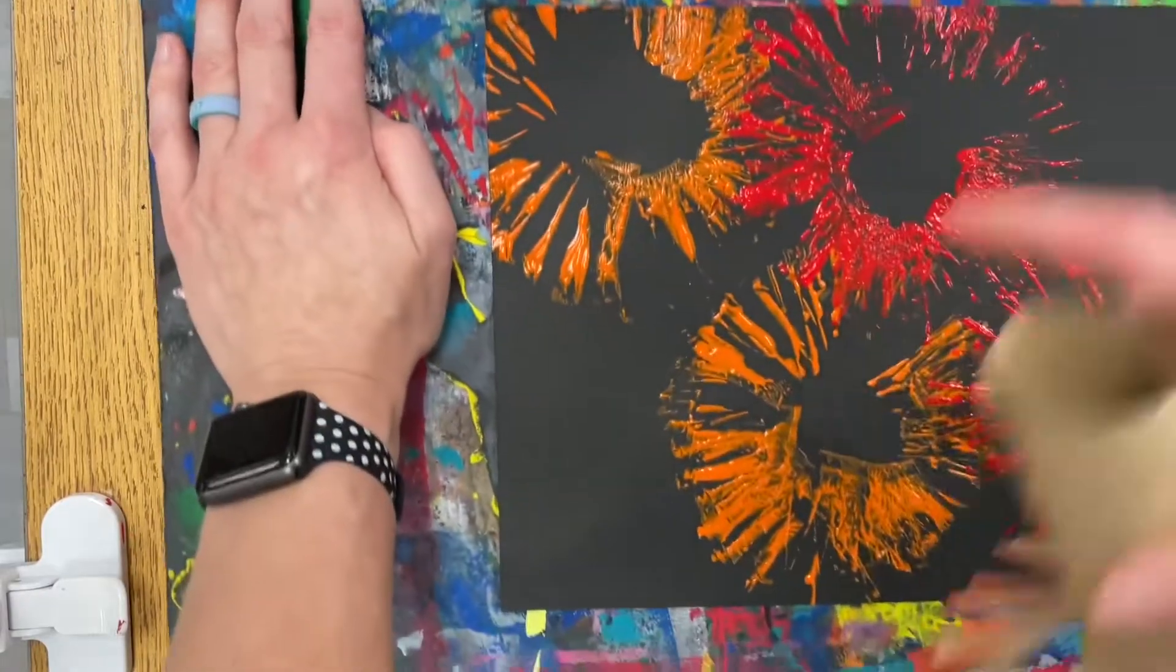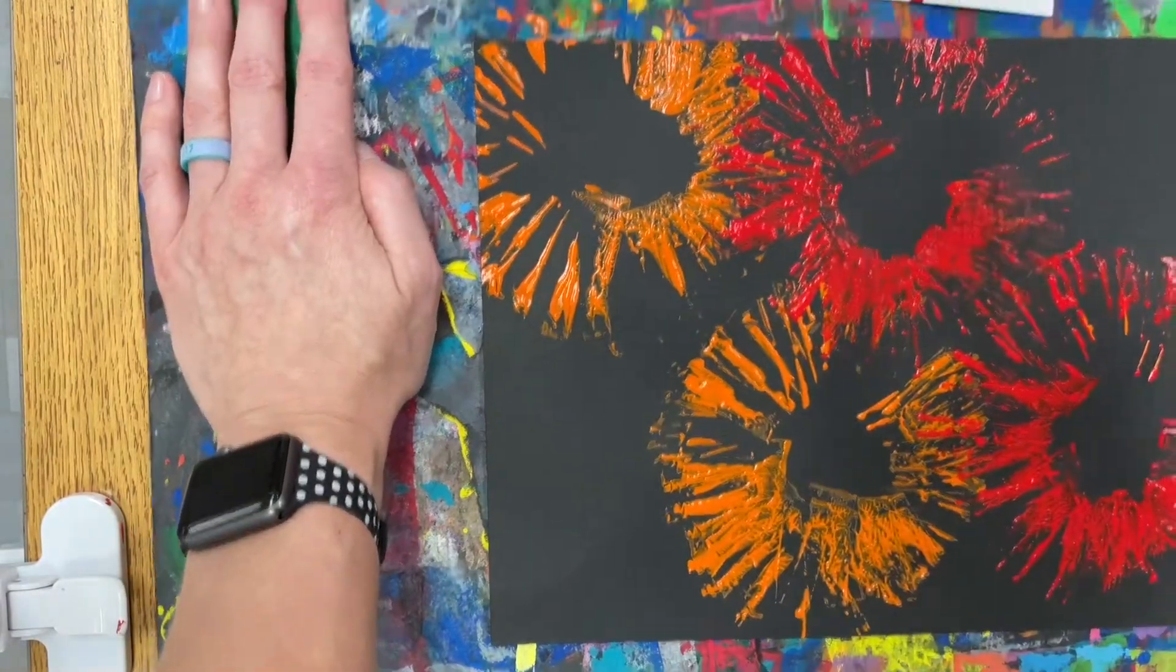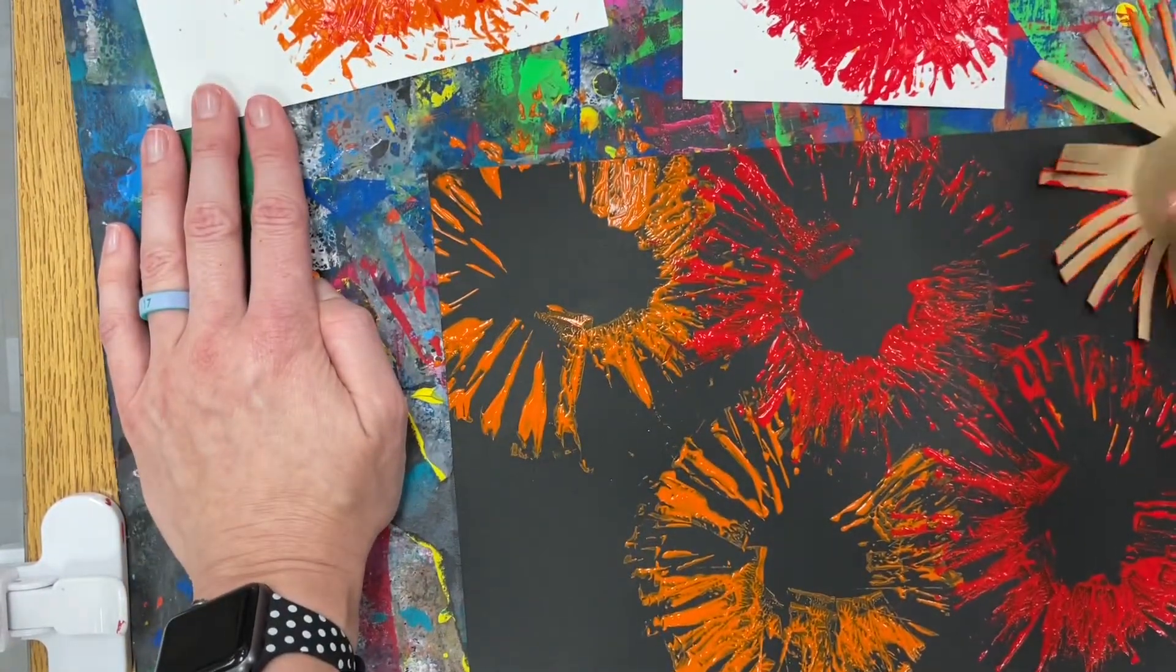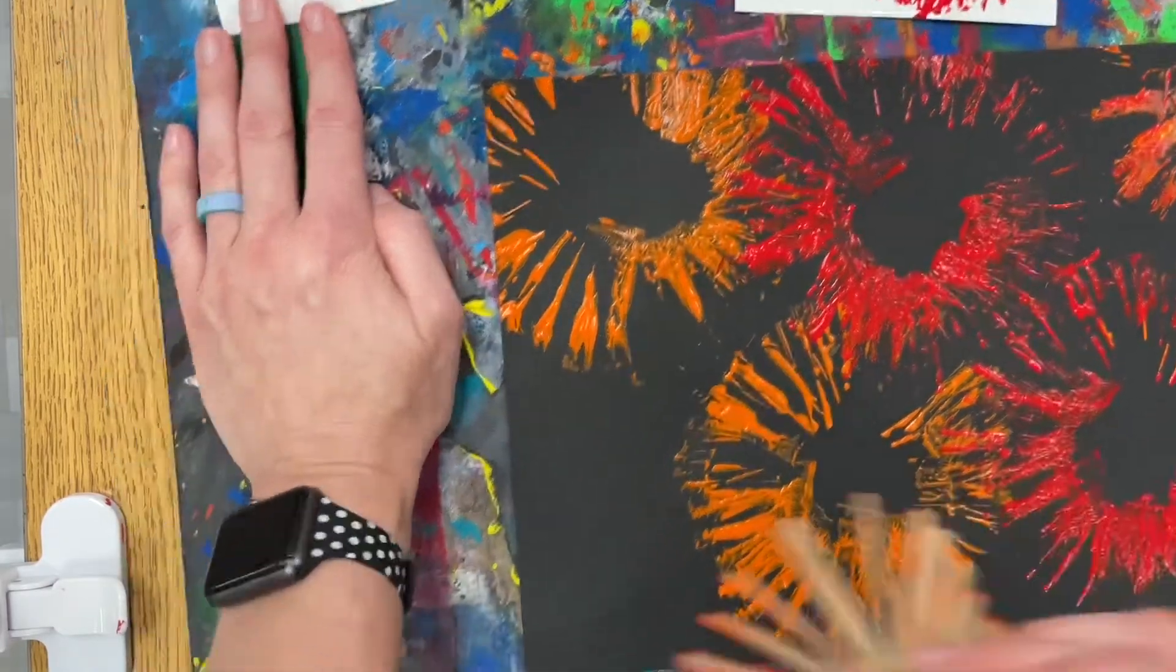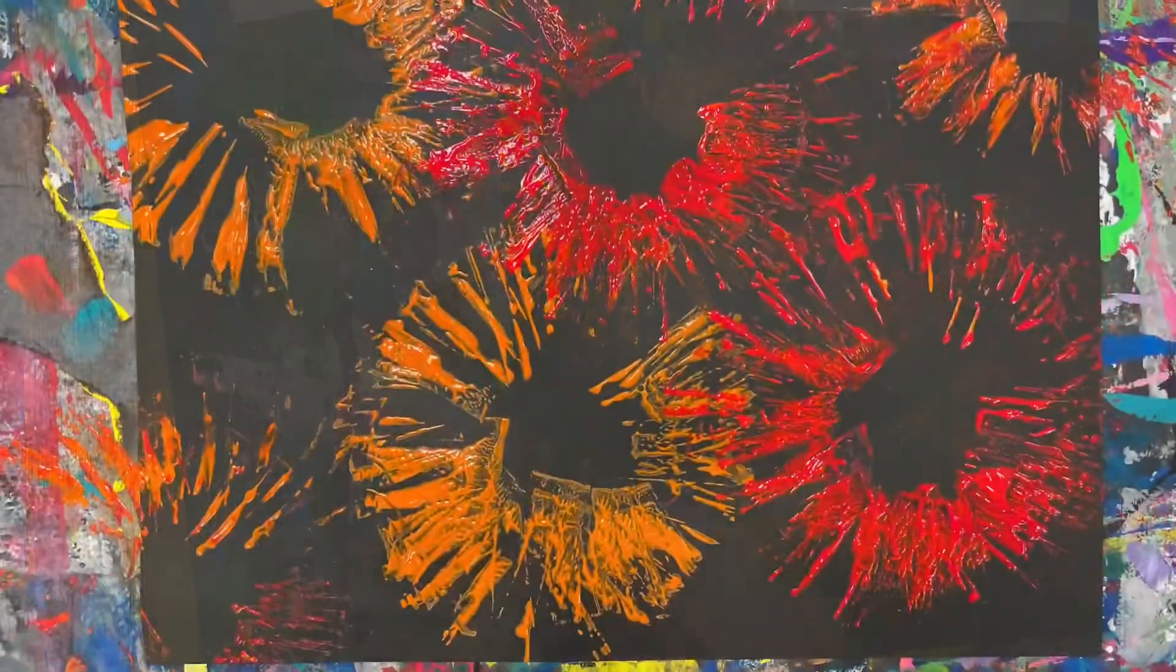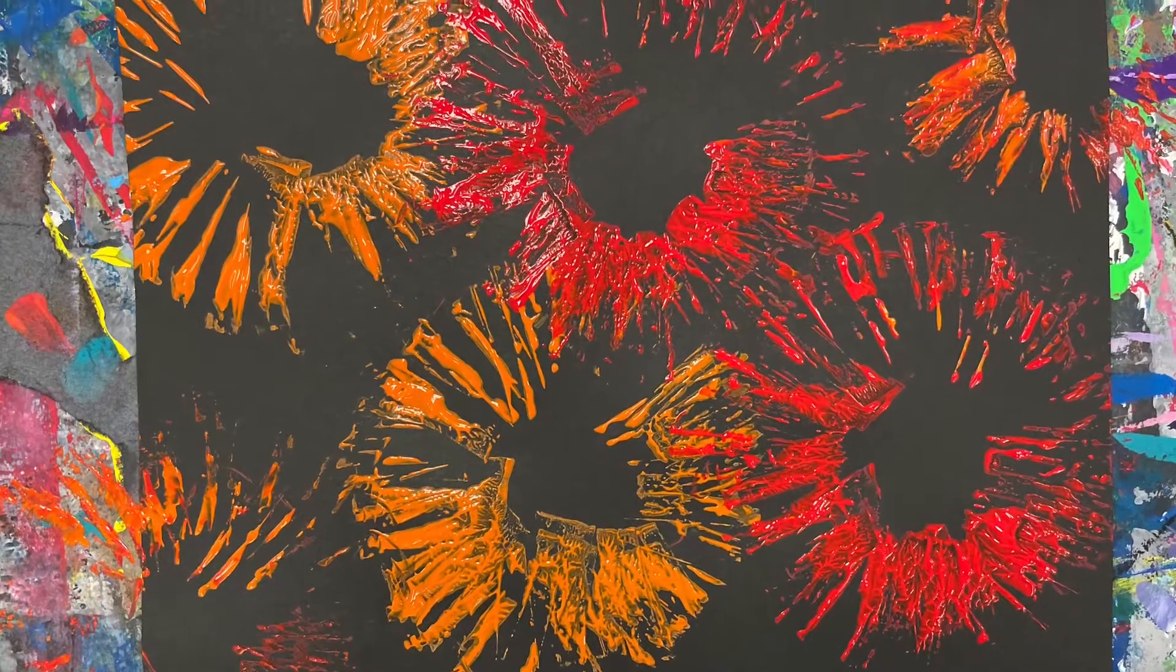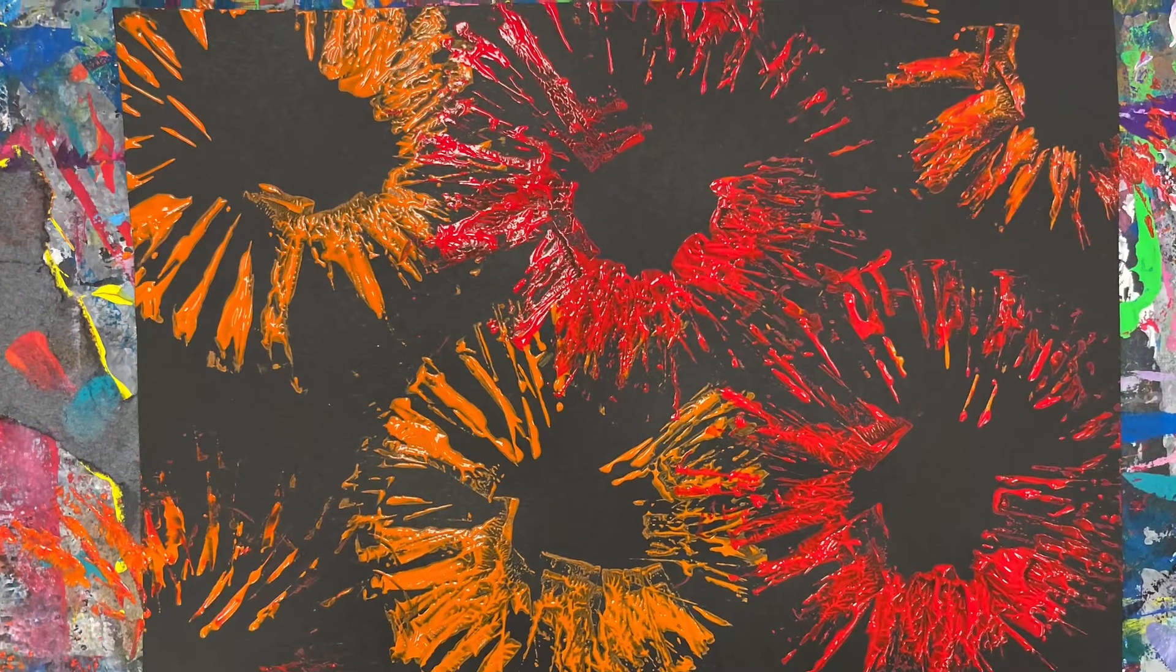Then if you have any remaining spots that are kind of really open, then you're going to do part of flowers going off the edge and your paper should be mostly full of different colored flowers.